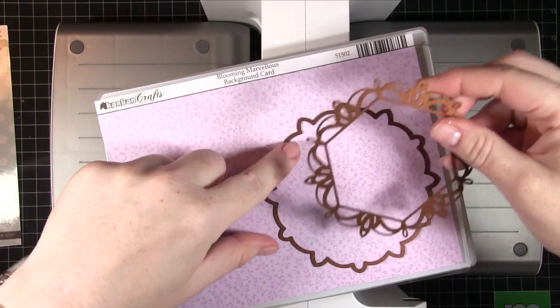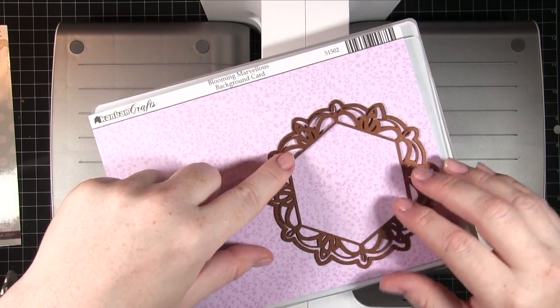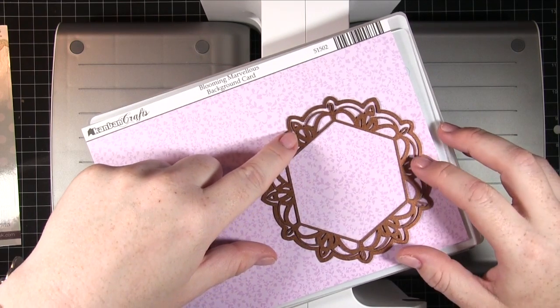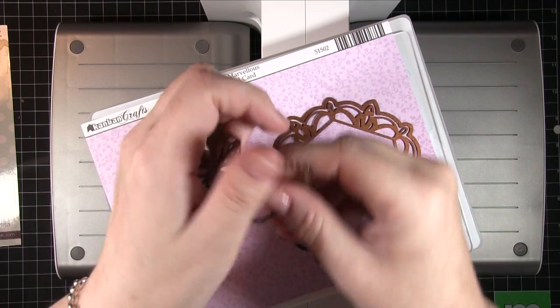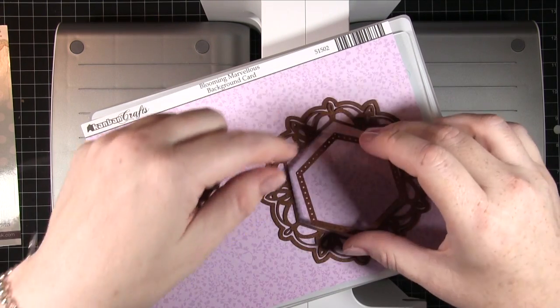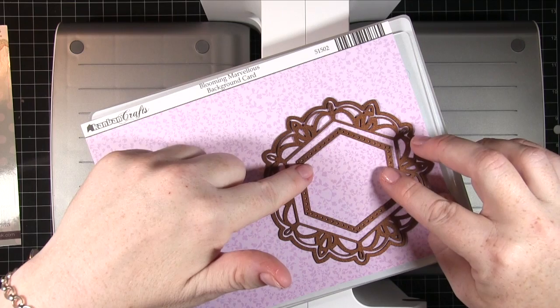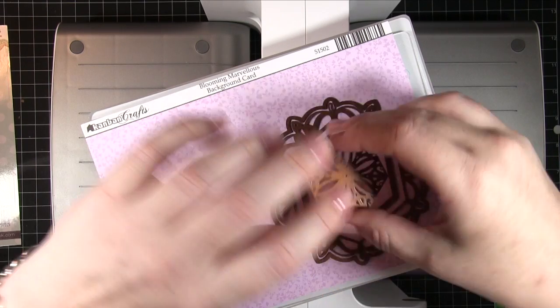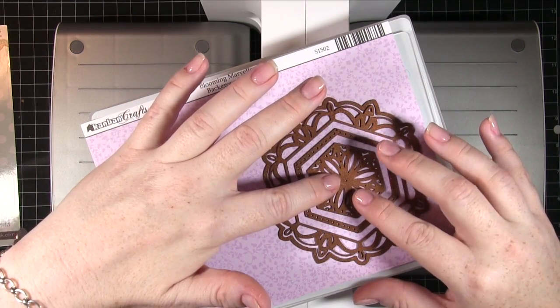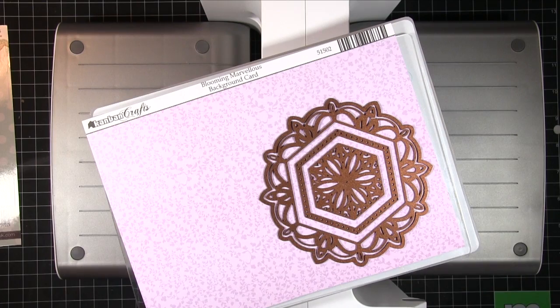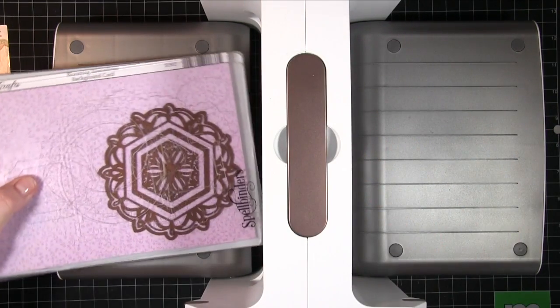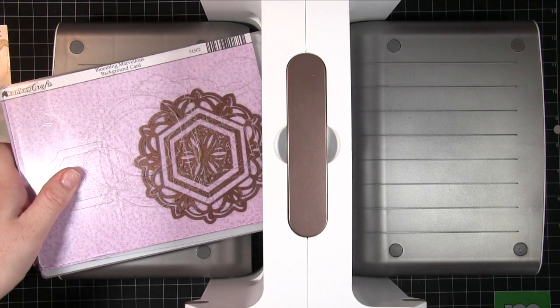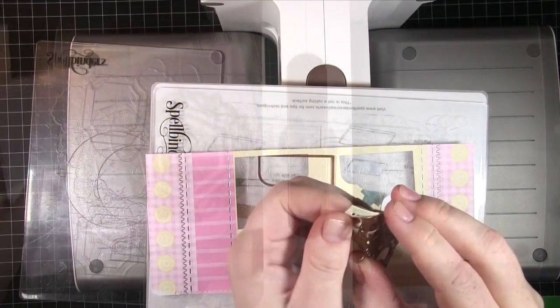For the decorative elements on the front, I'm using the Pacific Ocean Bora Bora die and also the borders and corners die. This piece is going to be the central element of my card and I'm using pretty much all the layers on it, along with the blooming marvelous cardstock from Kanban. For this I'm using my smaller plate because it's a magnetic plate and makes it easier to layer everything up without having to tape it.